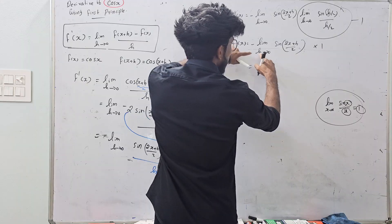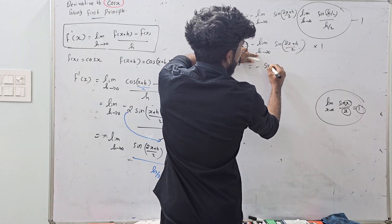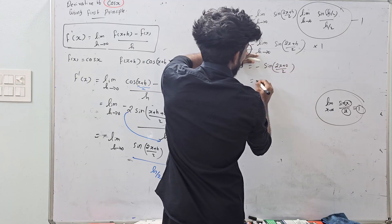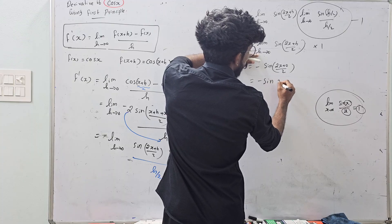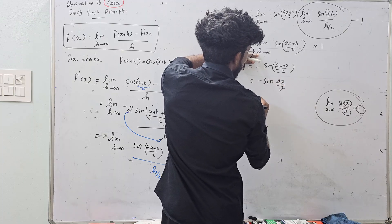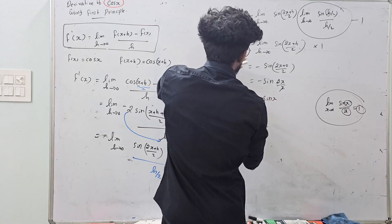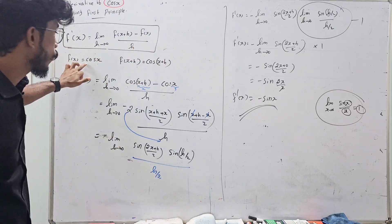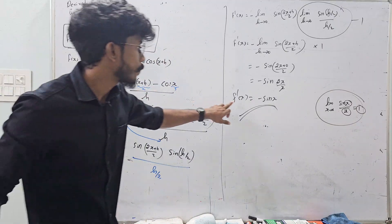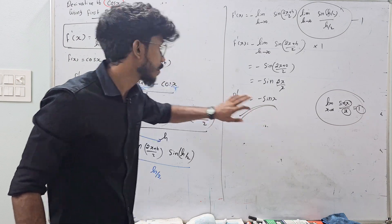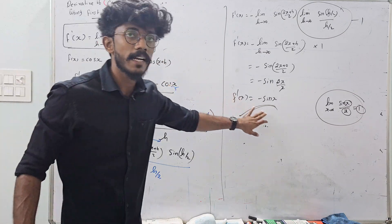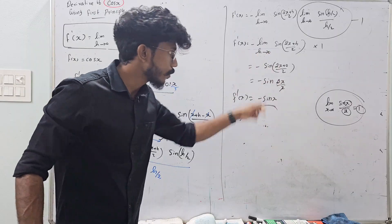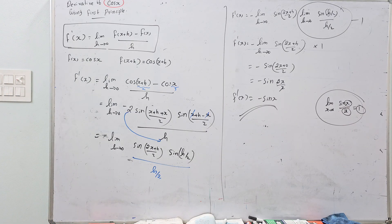So minus sin(2x/2) which means minus sin x. The answer is f'(x) = minus sin x. So f'(cos x) = minus sin x. The derivative of cos x is minus sin x.